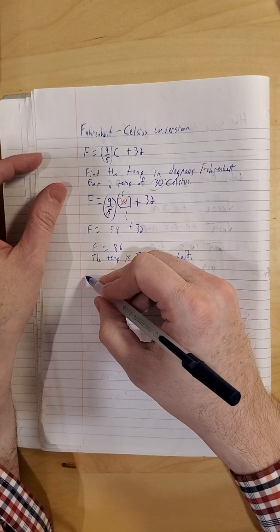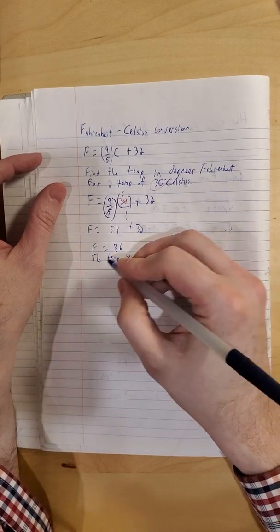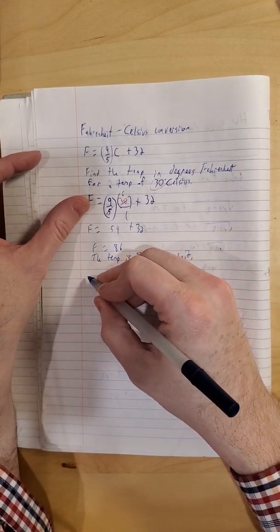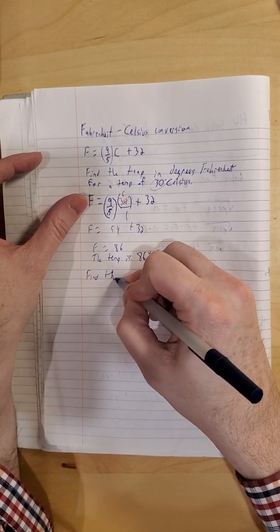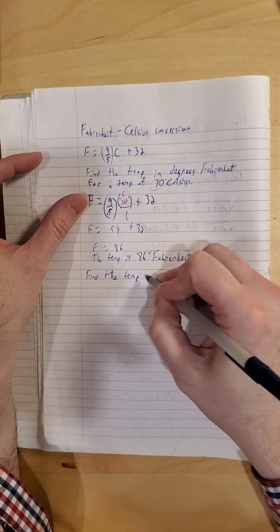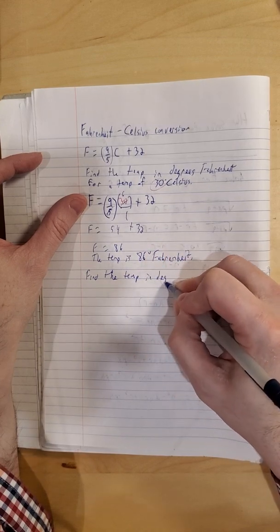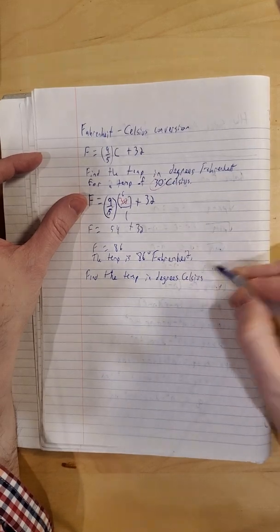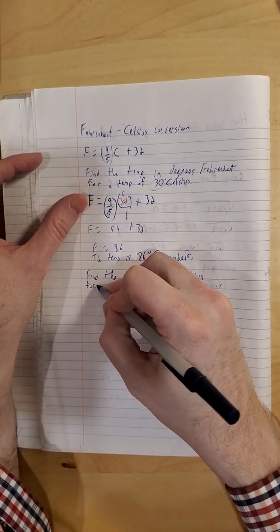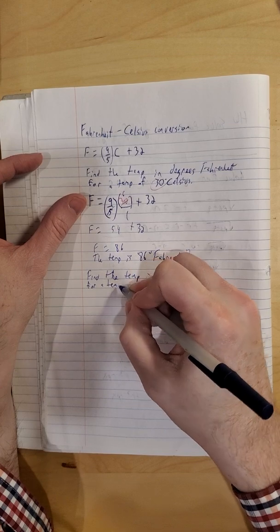They may give us a temperature in Fahrenheit and ask us to turn it into Celsius, and there's a couple different ways to deal with that. So we'll find the temp in degrees Celsius for a temp of 113 degrees Fahrenheit.